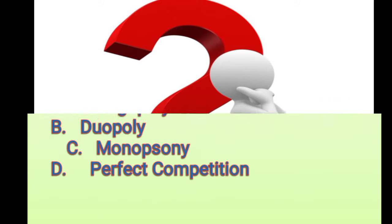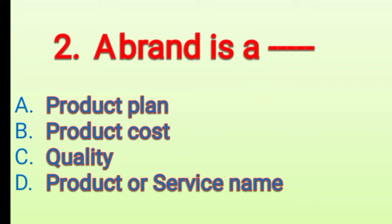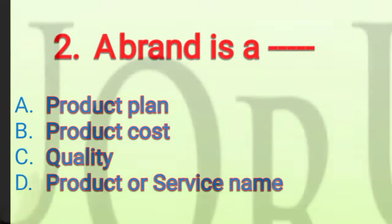Now it's time to check our knowledge. Two important questions for you. First question: a situation in which only two firms exist is called — options are oligopoly, duopoly, monopsony, or perfect competition. Second question: a brand is a — options are product plan, product cost, quality, or product or service name. Think about it — we will continue and return to the answers.